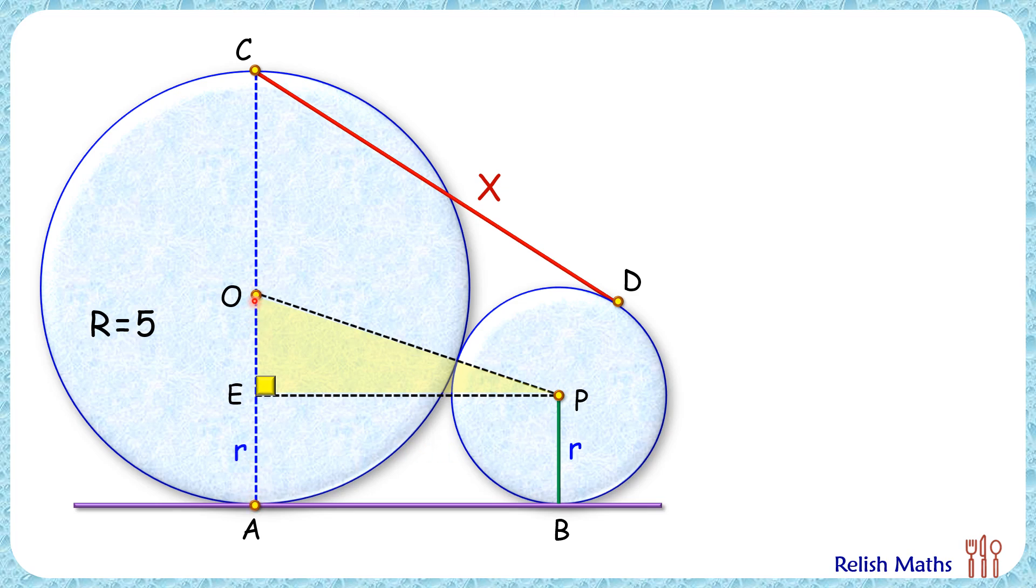Now here this red line segment is 5 centimeters and this is r centimeters, so OP full length will be 5 plus r. Applying Pythagorean theorem in this triangle,